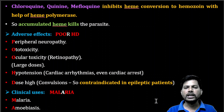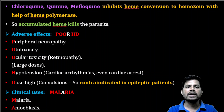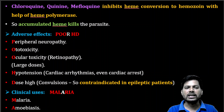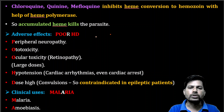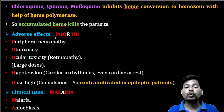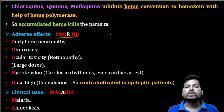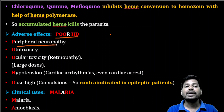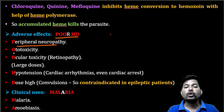The adverse effects of drugs are generally because of their mechanism, or because of overdose or long-term usage. The adverse effects of chloroquine can be remembered with the trick 'POOR HD'. Chloroquine causes peripheral neuropathy, damaging the peripheral nervous system and decreasing peripheral nervous system functioning.